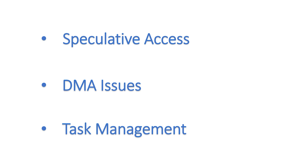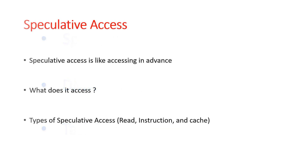Let's start with speculative access. Speculative access is when the CPU accesses some memory locations in advance and fetches instructions or data from them, so that wait cycles can be reduced. This accessing is done by the CPU on its own, without any explicit instruction, and it helps improve performance.